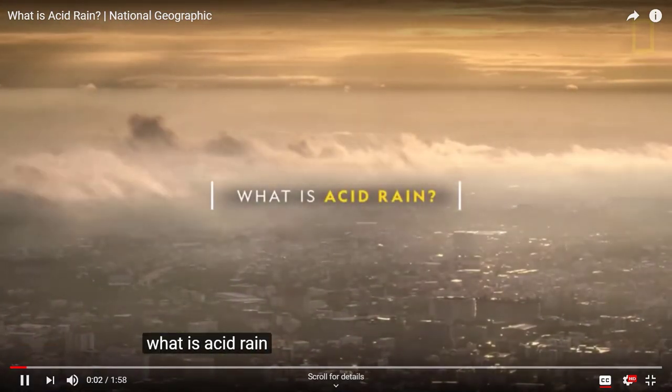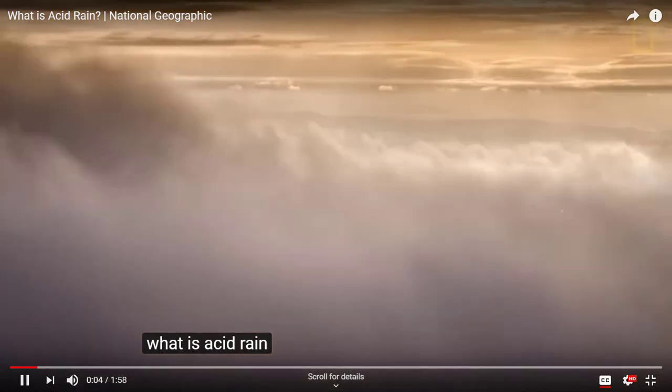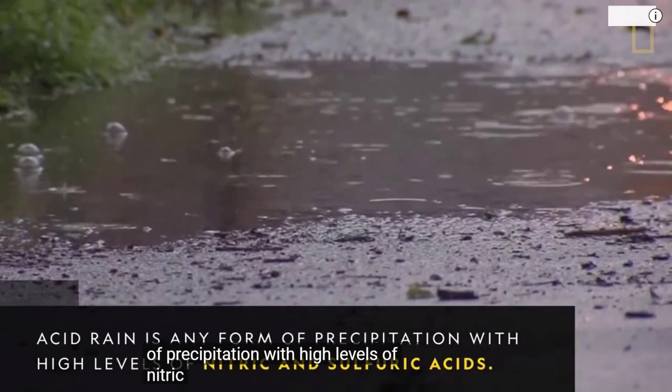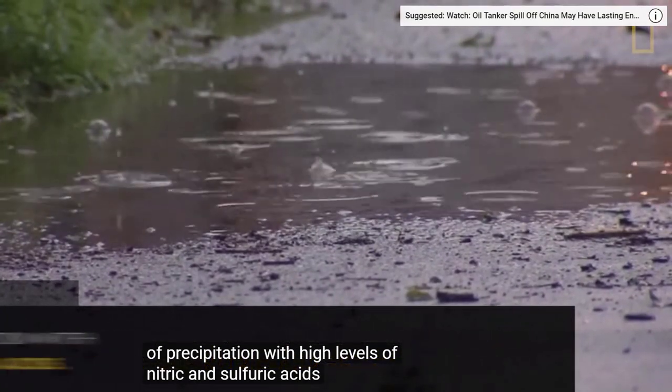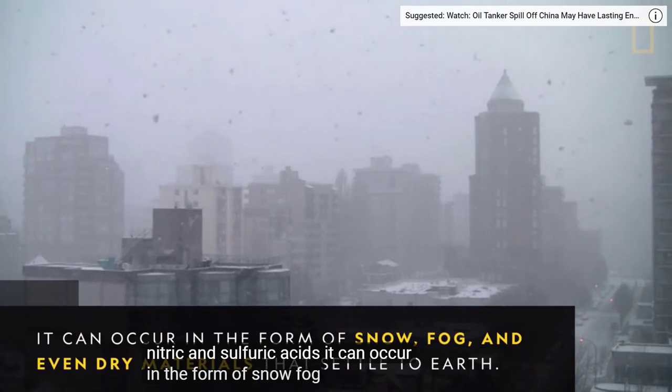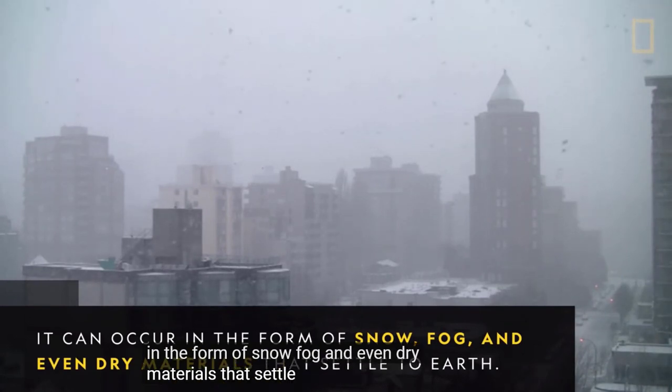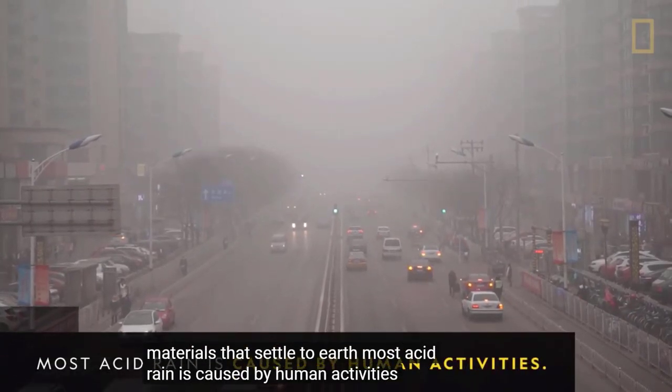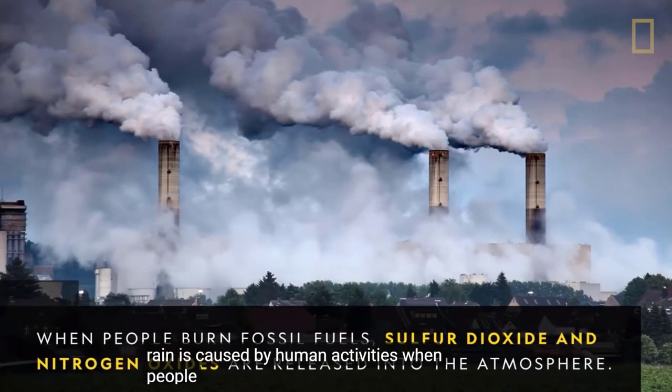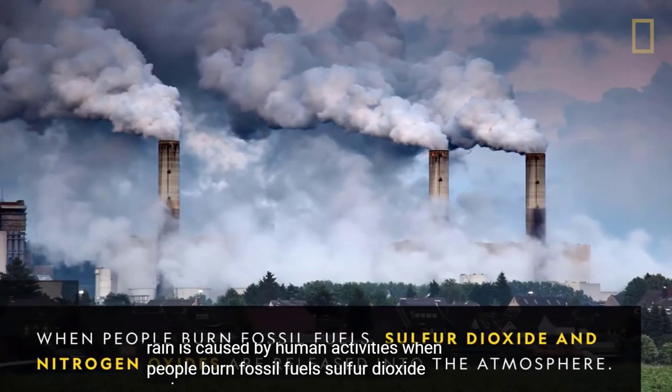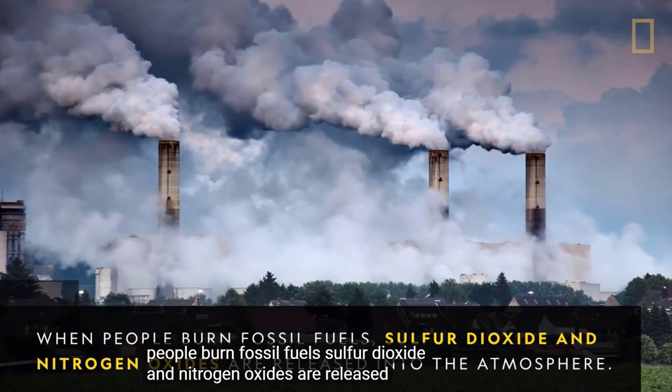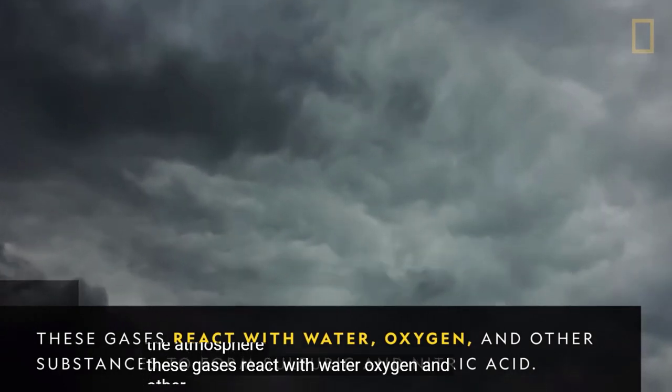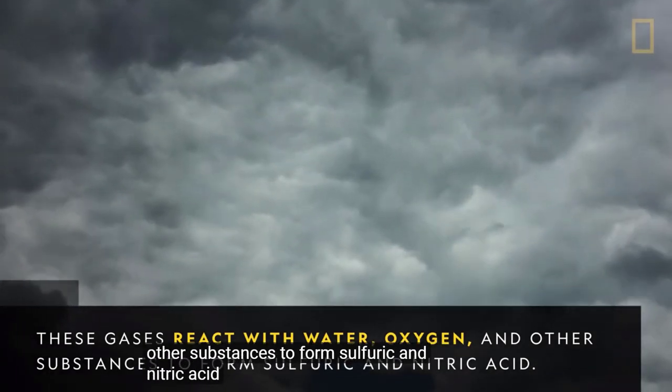What is acid rain? Acid rain is any form of precipitation with high levels of nitric and sulfuric acids. It can occur in the form of snow, fog, and even dry materials that settle to earth. Most acid rain is caused by human activities. When people burn fossil fuels, sulfur dioxide and nitrogen oxides are released into the atmosphere. These gases react with water, oxygen, and other substances to form sulfuric and nitric acid.